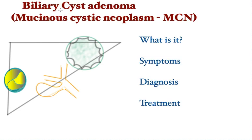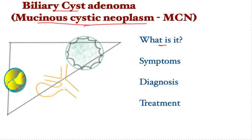A brief description of the biliary cyst adenoma, or mucinous cystic neoplasm of the liver — a rare cause of a cyst, more common in females. In the cartoon you can see a thicker-walled cyst; it may have finger-like projections, a thicker more viscous fluid, and septations. These features when seen on imaging are concerning for biliary cyst adenoma or MCN — mucinous cystic neoplasm.